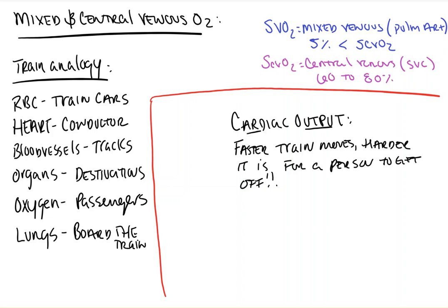Patients with increased cardiac output have a train that's moving faster. As the train moves faster, it's harder for people to get off. Physiologically, the faster blood fluxes through a tissue, the less oxygen you're able to unload. Conversely, patients with poor cardiac output, where blood moves slower, allowing it to stay in the tissue longer and allowing that tissue to extract oxygen, will end up having a lower venous oxygen when sampled. So, increased cardiac output leads to a higher SVO2, and a lower cardiac output will lead to a lower SVO2.